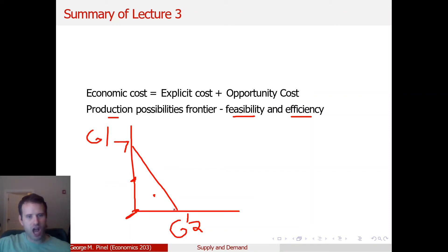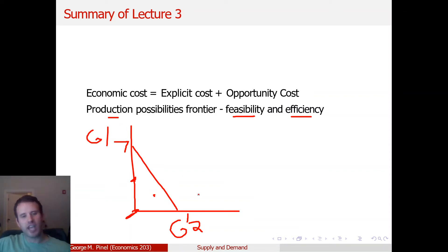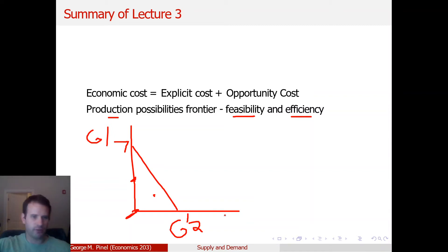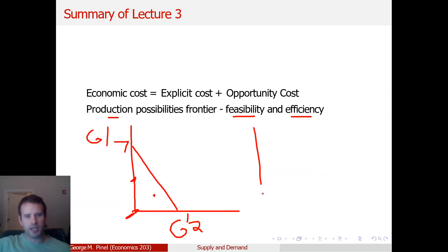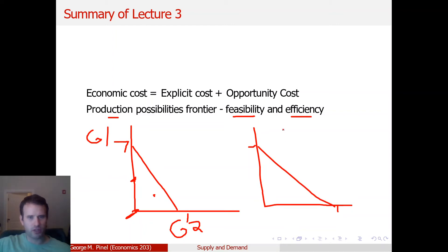Everything along the production possibilities frontier line is both feasible and efficient. Everything above this line is infeasible — he can't make 10 cars because he only makes seven cars a day and he's got one day. He can't make two songs because he makes one song a day. For one individual person's PPF, you just need to find the two intercepts and draw a straight line.